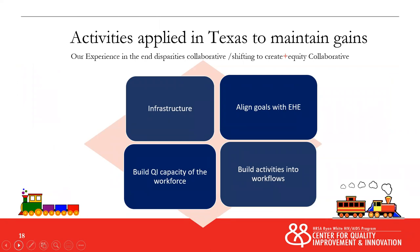These are some high-level activities we used to maintain those gains. We continued working on infrastructure — at the health department, that's our place: making sure you have a data system, ensuring training is happening across the state and addressing needs in different areas. We aligned our goals with Ending the HIV Epidemic: 90% virally suppressed, 90% retained, and 50% less new acquisition of HIV. We implemented monthly trainings called 'fundamentals,' with different topics every month on the fourth Tuesday of the month from 1:30 to 2:30, so folks can join as their schedules permit. We have over 100 folks join every month.